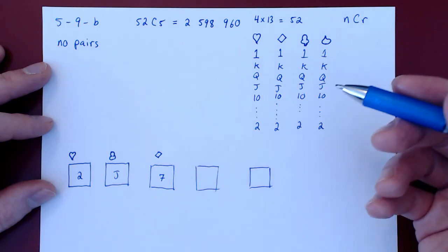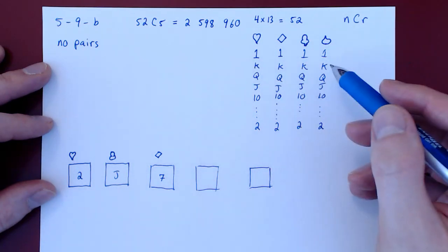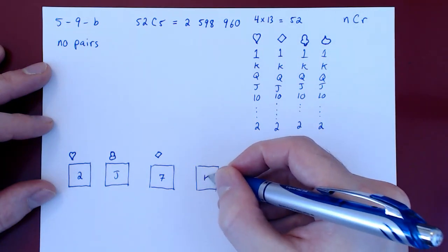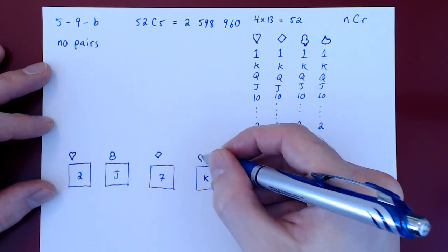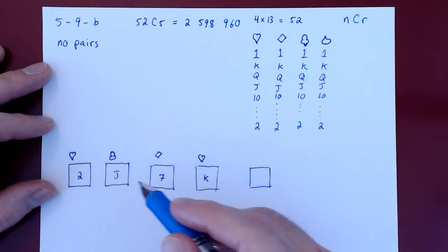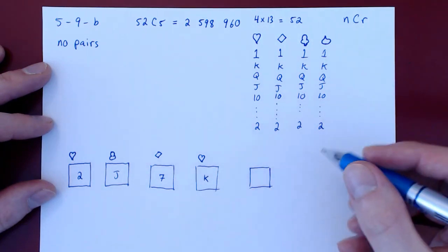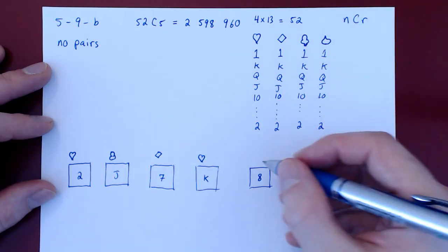Now for the fourth card, it can't be a two, nor a jack, nor a seven. Say it's a king, a king of hearts. And for the fifth card, it can't be a two, nor a jack, nor a seven, nor a king. Say we have an eight, an eight of spades.